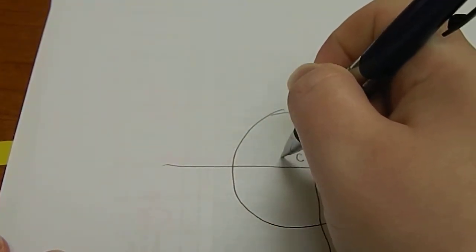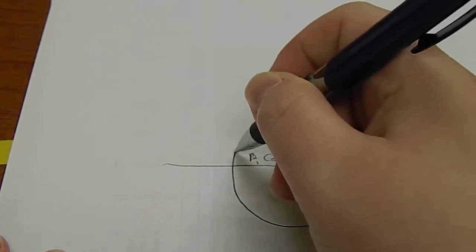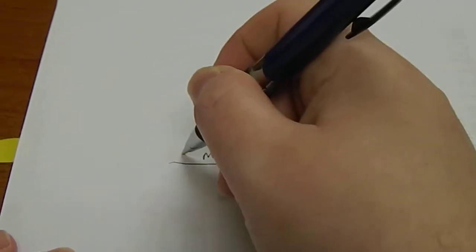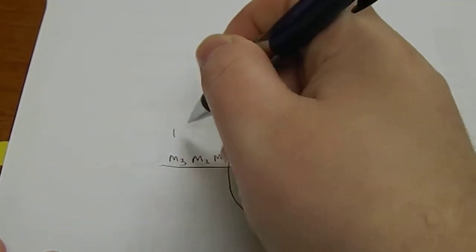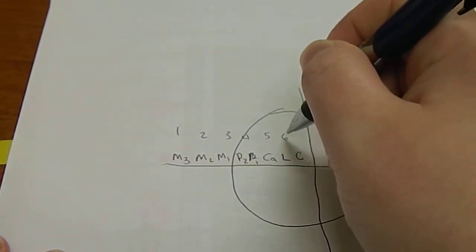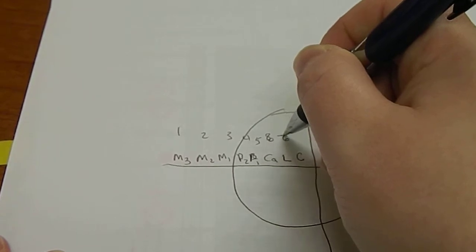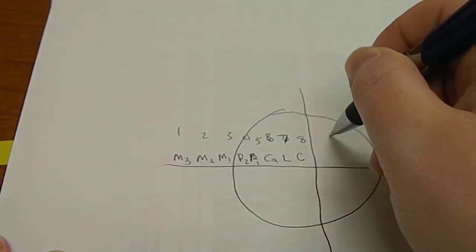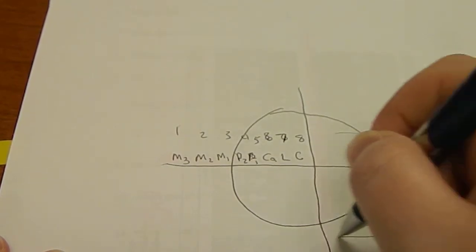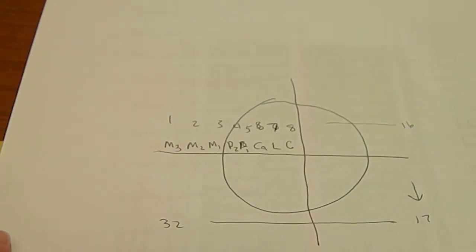Then you can label: central, lateral, canine, premolar one, premolar two, molar one, molar two, and molar three. Then you can number — I suggest doing this for the first few times. Here's five, six, your lateral is seven, then eight, going all the way through sixteen, then drop down seventeen through thirty-two. Label however you'll remember best.